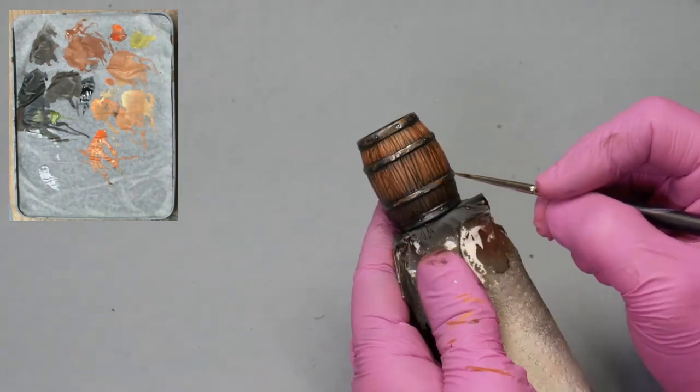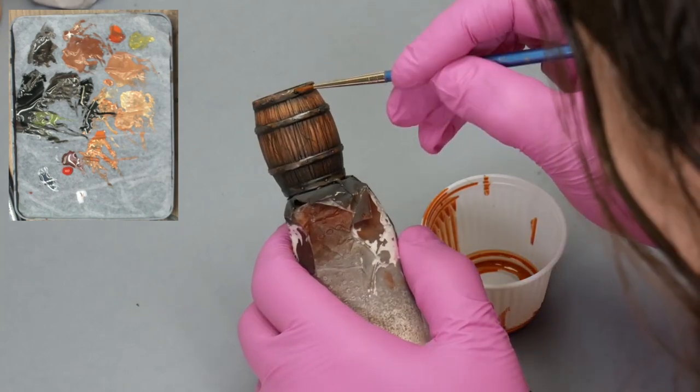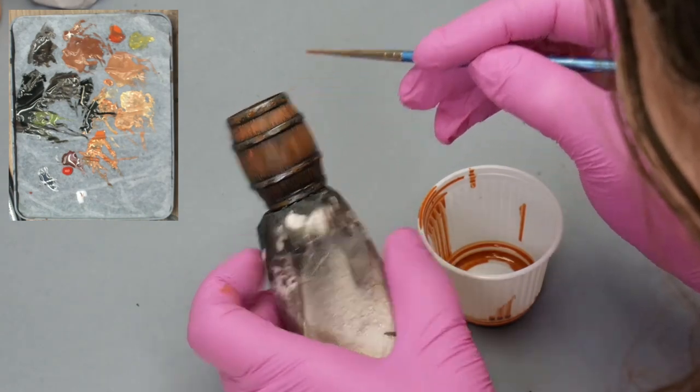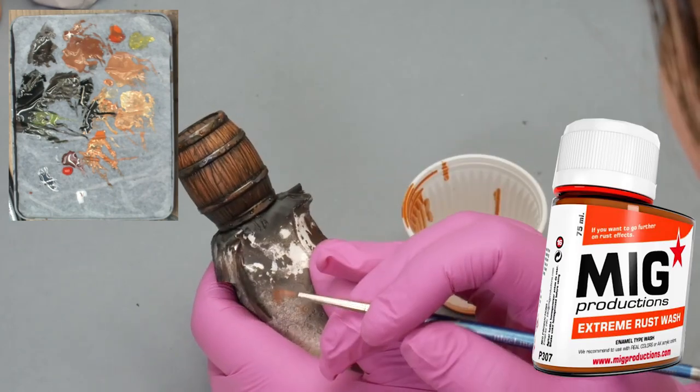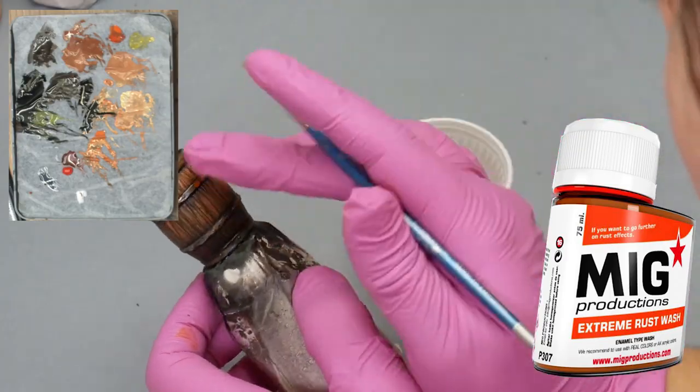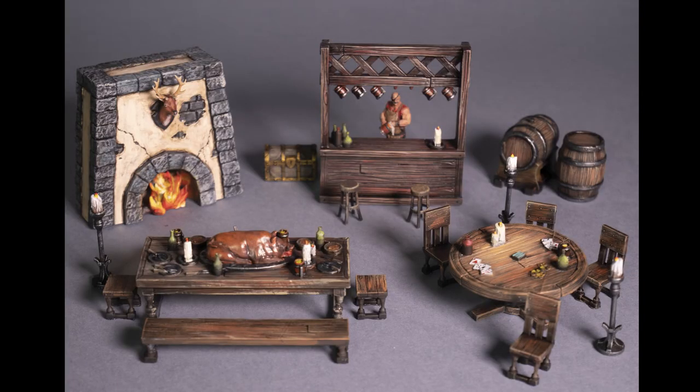Making rust effects with orange and reddish brown tones with Ultramatte medium and taking the opportunity to try the ready-to-use wash extreme rust wash. That's it. Now let's paint the tavern.